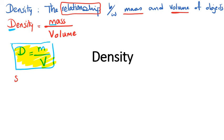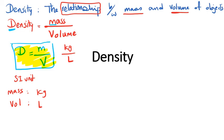Now, what is the unit for density? The SI unit for mass is kilograms and for volume is liters, so density has the SI unit of kilograms per liter. But when we work in the lab, we never use that unit because we prefer to use small amounts of substances. That is why we use gram for mass instead of kilogram, and milliliter for volume.